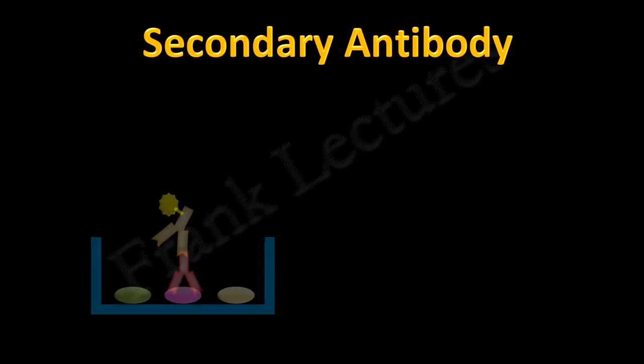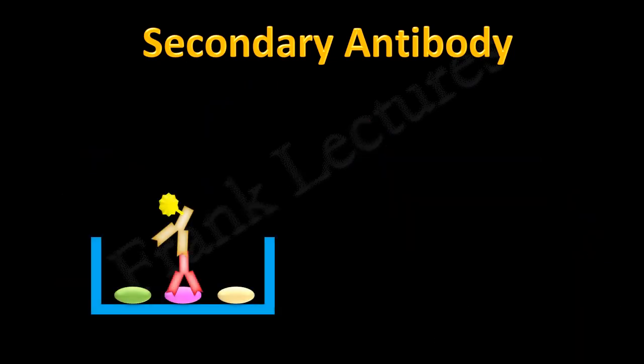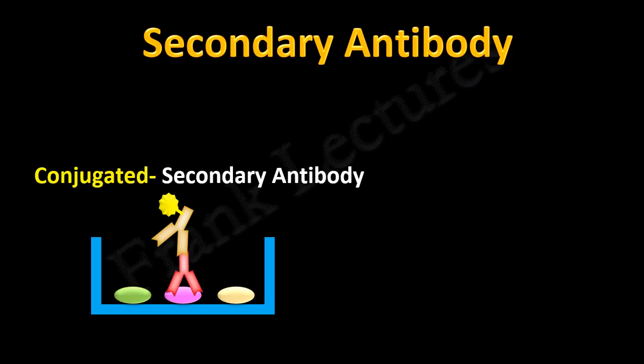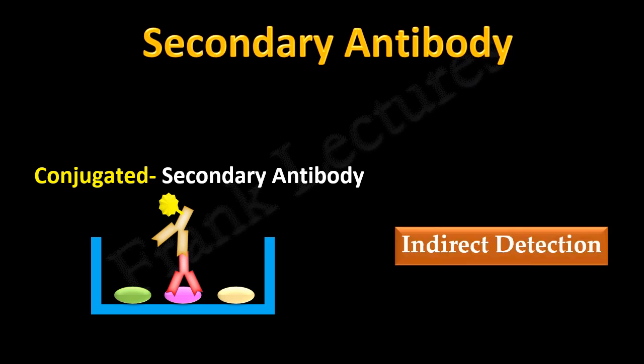Most of the time in a detection assay, labeled or conjugated secondary antibodies are used. And when a conjugated secondary antibody is used in a detection assay, the detection is known as indirect detection. This is because the conjugated antibody is not directly binding to the antigen.